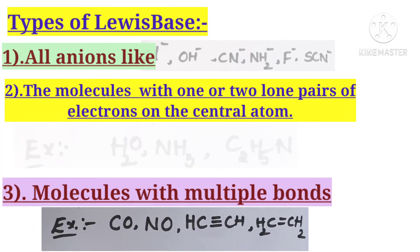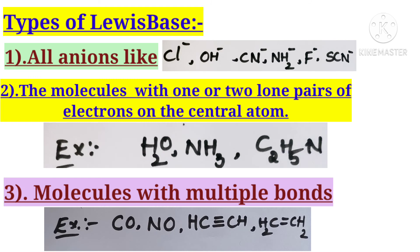Next, types of Lewis bases. What are the types of Lewis bases? All anions act as Lewis bases. For example, Cl−, OH−, CN−, NH2−, F−, and SN−. These are all electron-rich compounds. They donate an electron pair to another atom, and that is why they act as Lewis bases. Electron pair donor is called Lewis base, so all anions are Lewis bases.